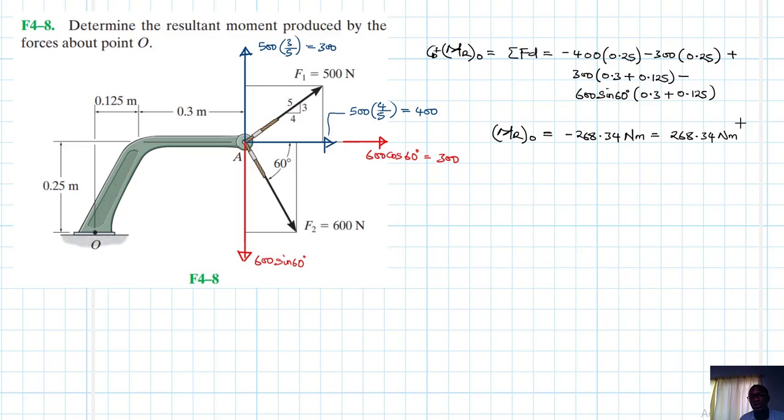So we can also show it here. This is clockwise, so this one is clockwise like that. So this one is equal to 268.34 newton meters.